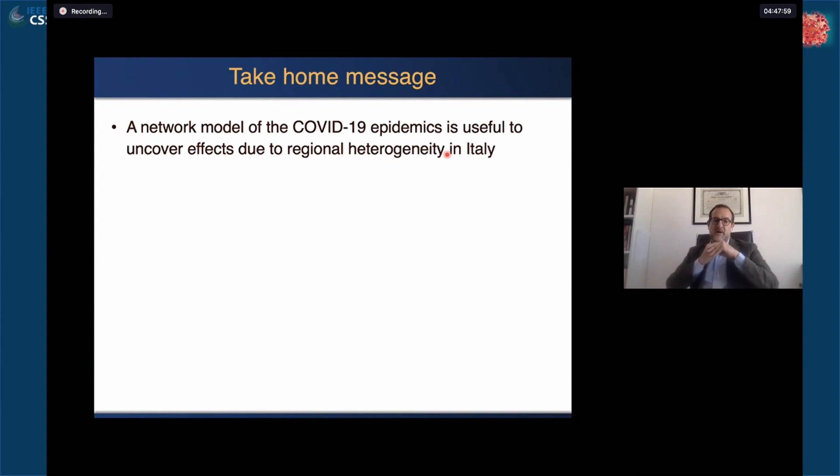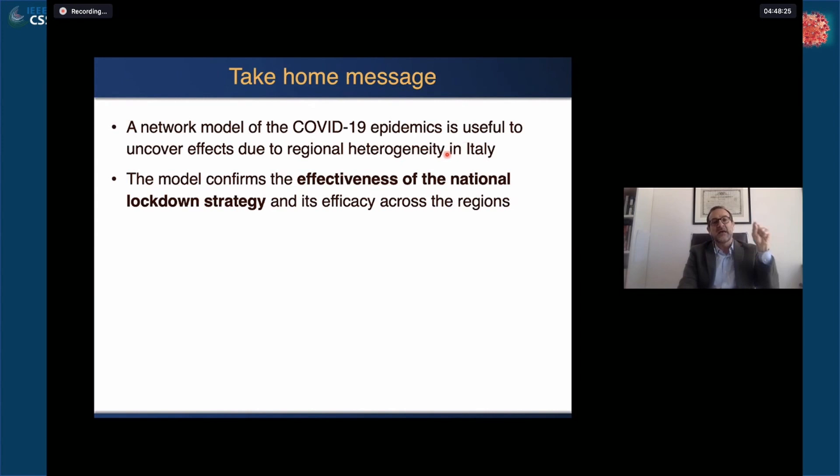What are the take-home messages from our study? First, network models of the epidemics might be very tough to identify. I'm going back to what Beppe said earlier, but they can be useful to uncover the effects due to regional heterogeneity.